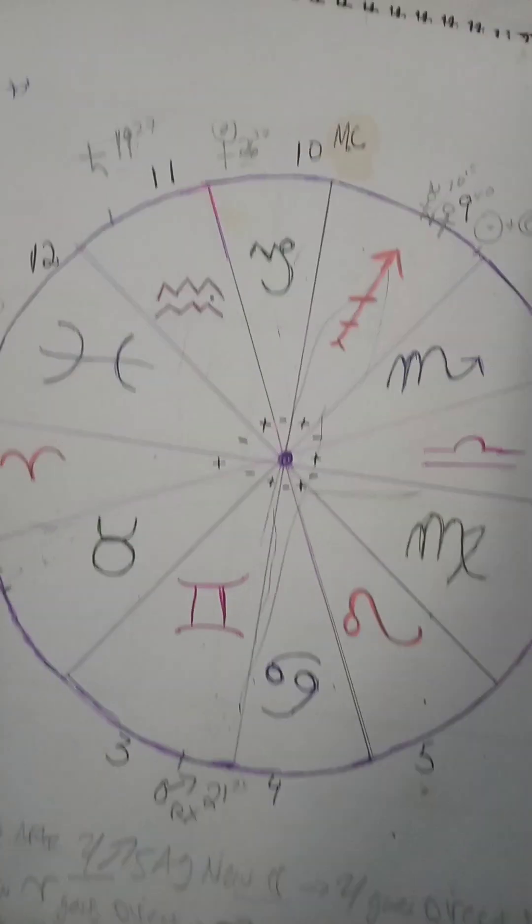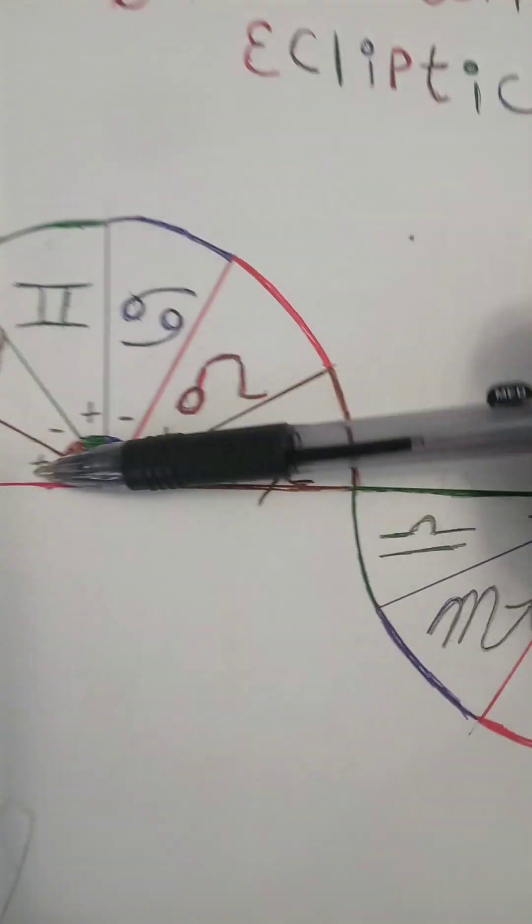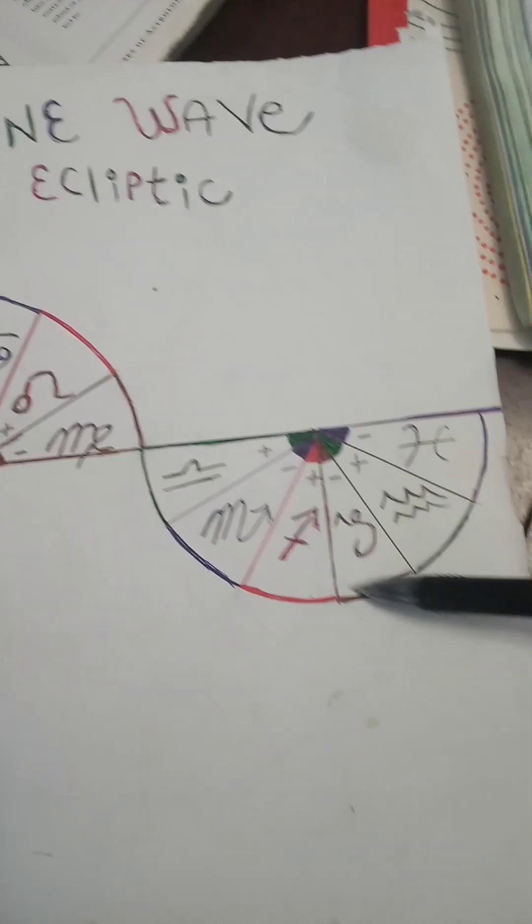There's a certain premature expression because the first house is the very beginning of this sine wave.